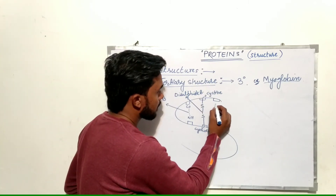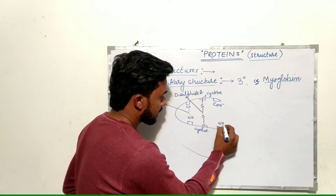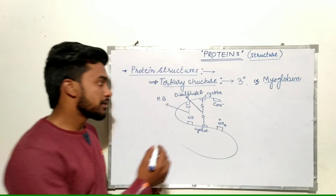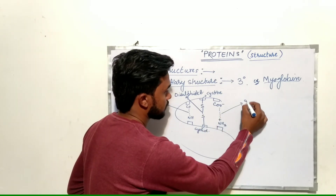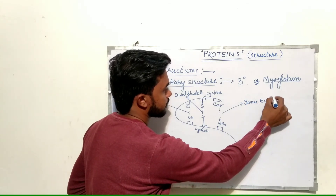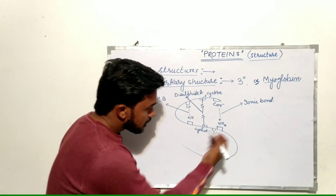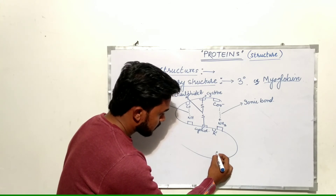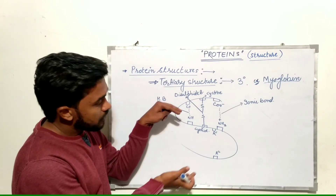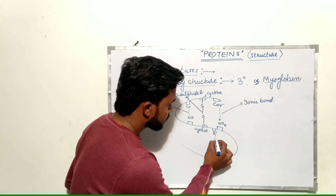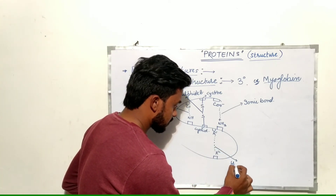We also have a COO⁻ group on one side and an NH₃⁺ group on the opposite side. There is an attraction between these positive and negative groups and they together form an ionic bond. Additionally, we have alkyl groups on opposite sides — these alkyl groups are hydrophobic in nature. When this protein structure is placed in water, there is an attraction between these two hydrophobic molecules, they form a cluster, and this is known as hydrophobic interaction or hydrophobic bonding.